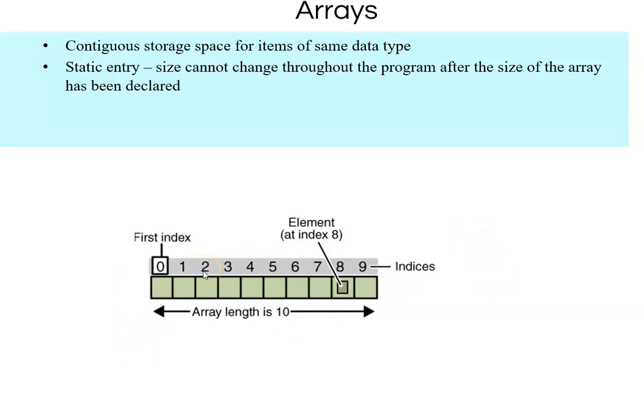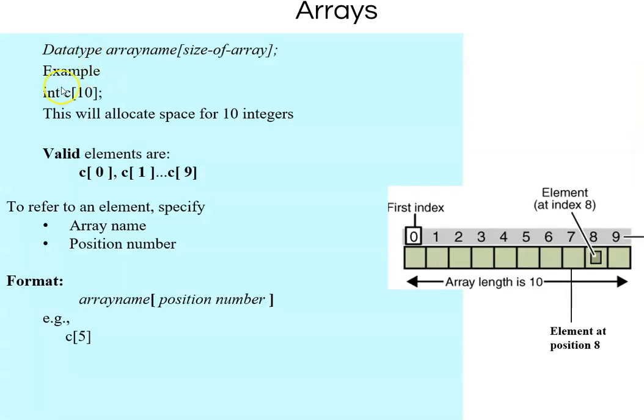When you declare int c[10] with square brackets, it creates 10 elements in memory. The valid indexes are c[0], c[1], c[2] up to c[9]. For example, c[5] is the sixth element because indexing starts at 0. The first index is 0 and the last is 9.